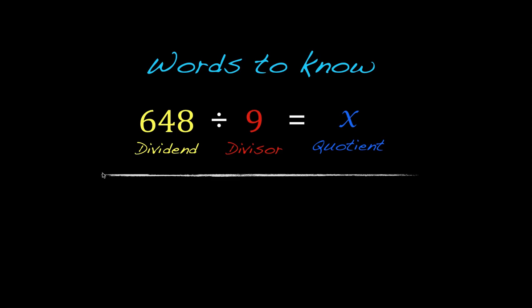So before we get started, there's probably a couple words that we want to look at here. And the first one is dividend. And the dividend is going to be that big number that we start with that we're going to divide up into smaller equal parts. In this case, we have $648.